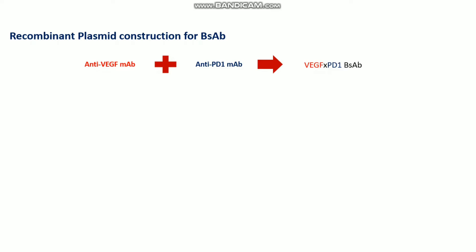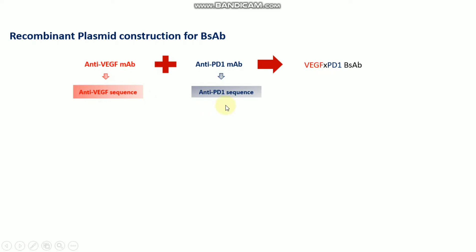How is this kind of bispecific antibody made? You need to have the known sequence of the anti-VEGF monoclonal antibody, and also the anti-PD-1 monoclonal antibody sequence. Then these two sequences can be joined together by a linker — the hydrophilic amino acid glycine and serine residues. We take only the HV and LV — the heavy chain variable region and the light chain variable region — of the anti-PD-1 sequence, and join them by a linker.